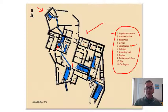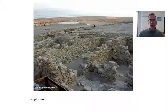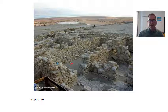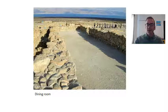One of the more interesting rooms at this site is the scriptorium. Scripto is a Latin word meaning 'I write,' so the scriptorium is where the residents wrote their books. We know from extensive archaeological finds that they wrote quite a bit. We can identify it as a scriptorium because archaeologists found a large number of ink wells and writing pens there.